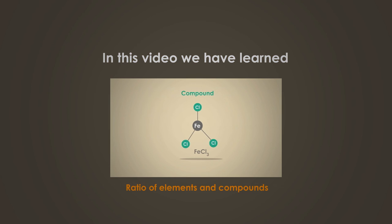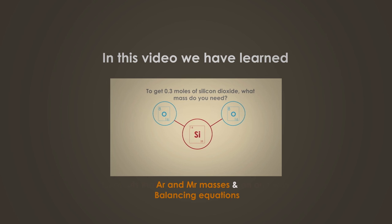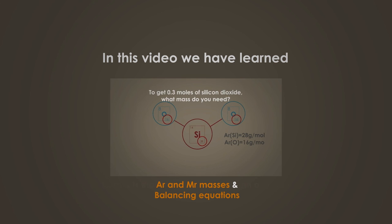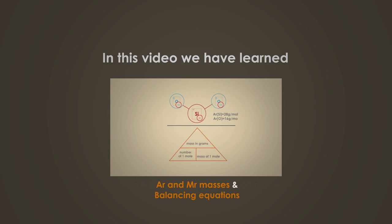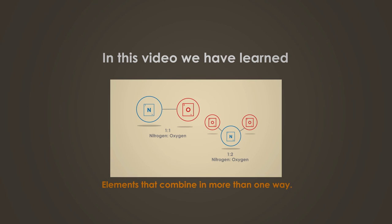In this video, we have learnt how to use mole ratios in formulae and equations to see how much you have of each element or compound. We have met the notation AR is relative atomic mass, and MR is molecular mass. We have calculated masses from moles and moles from masses. We have seen how we can combine ratios and relative masses to balance equations, and we have practised using elements that combine in more than one way.